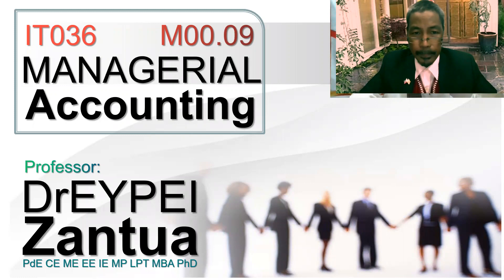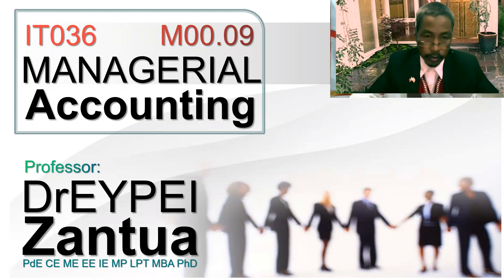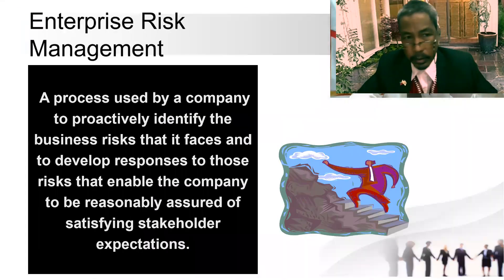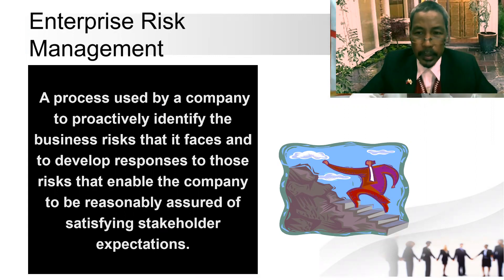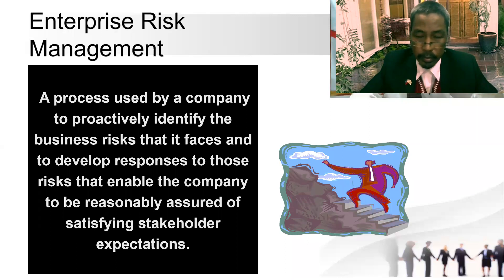Let us go directly to part nine of introduction to managerial accounting. Enterprise risk management is a process used by a company to proactively identify the business risks that it faces and to develop responses to those risks that enable the company to be reasonably assured of satisfying stakeholders' expectations.